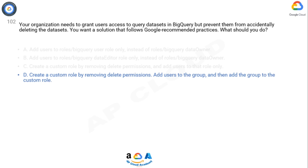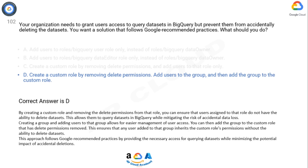Creating a group and adding users to that group allows for easier management of user access. You can then add the group to the custom role that has delete permissions removed. This ensures that any user added to that group inherits the custom role's permissions without the ability to delete datasets. This approach follows Google recommended practices by providing the necessary access for querying datasets while minimizing the potential impact of accidental deletions.